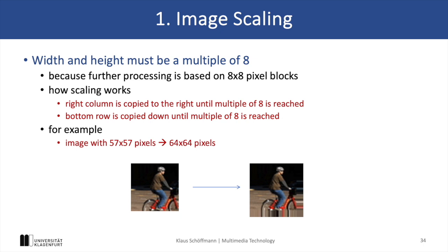Now let's go further into detail with each of these steps. Image scaling is necessary because the entire process, and in particular the DCT, works on 8x8 blocks. This first step checks if the width and height of an image are divisible by 8, and if not they are extended to the next multiple of 8 by simply copying the last column to the right or the last row down. You can see the result for a 57x57 image here, which is expanded by this step to 64x64 pixels.